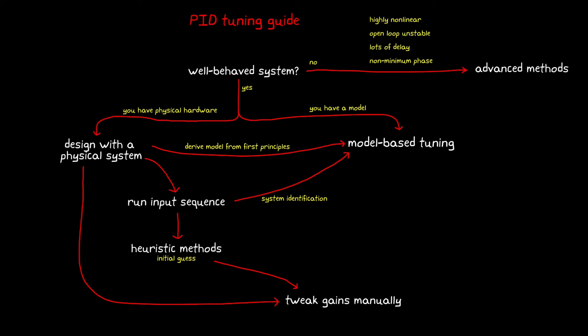At this point, you have a mathematical representation of your hardware, whether you used system identification, you derived it from first principles, or you were just given a model. And the next question is how to go about tuning the PID gains using model-based design.